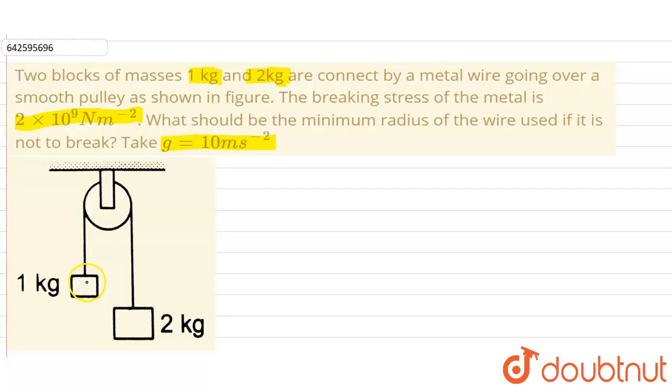The breaking stress of this metal is given to us. Let us call the breaking stress σ_b = 2 × 10^9 N/m², and we have to take the value of acceleration due to gravity as 10 m/s².